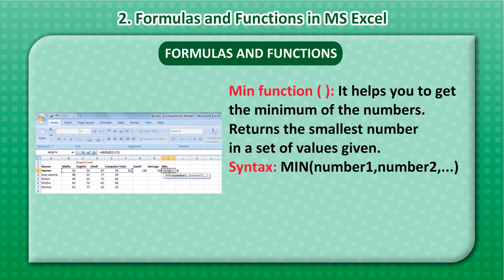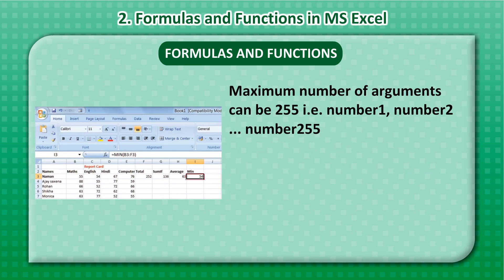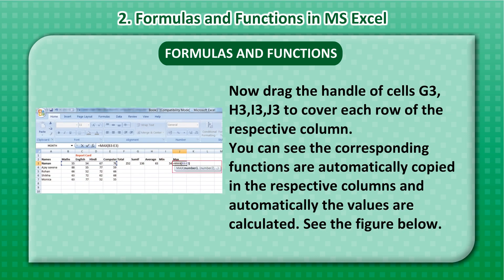The Min function helps you to get the minimum of the numbers. It returns the smallest number in a set of values given. Syntax: MIN(Number1, Number2, ...). The maximum number of arguments can be 255, that is, Number1, Number2, through Number255. Now, drag the handle of cells G3, H3, I3, J3 to cover each row of the respective column.